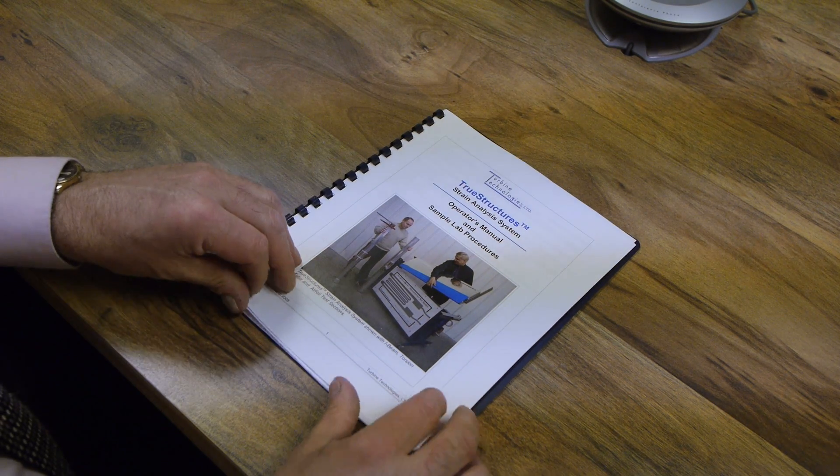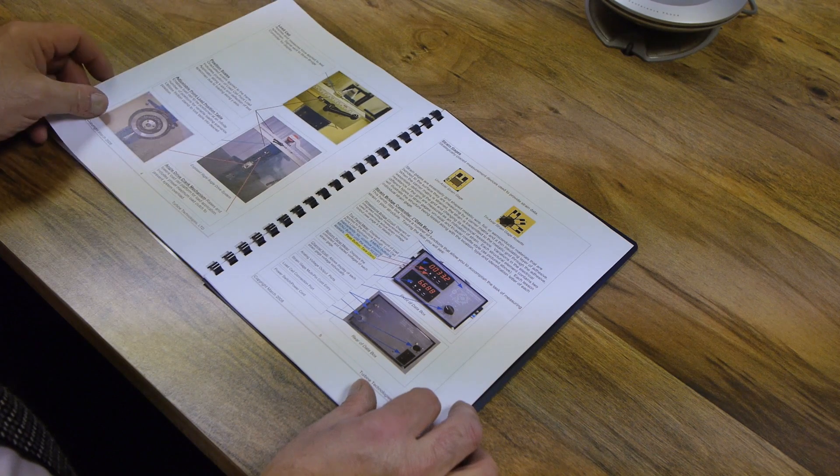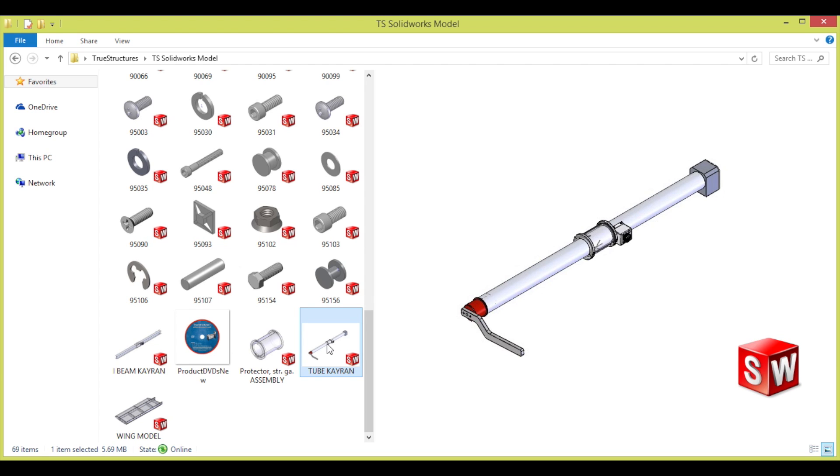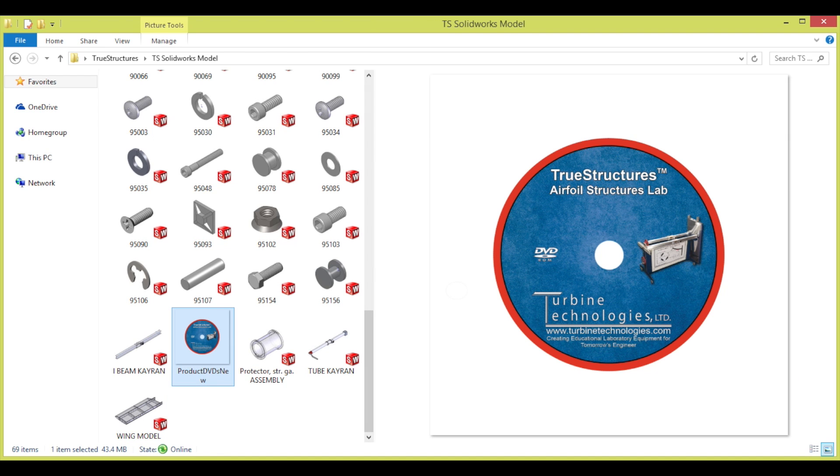A multi-lesson laboratory procedure is provided to illustrate common usage of the TrueStructures lab system. Solid models are also included in the system to show the details of each test specimen, including the internal airfoil structure. These solid models and laboratory procedures are provided on the included CD-ROM.